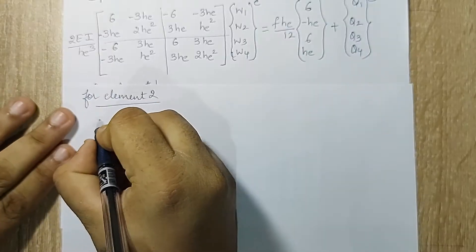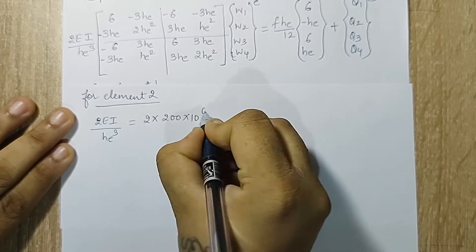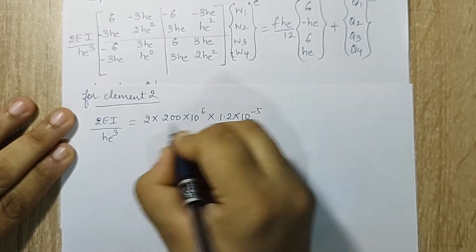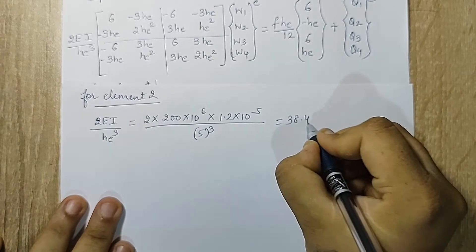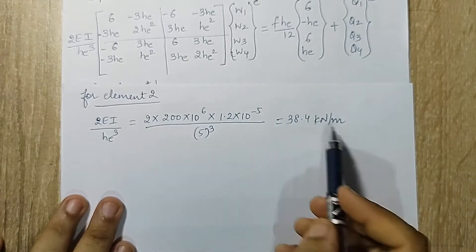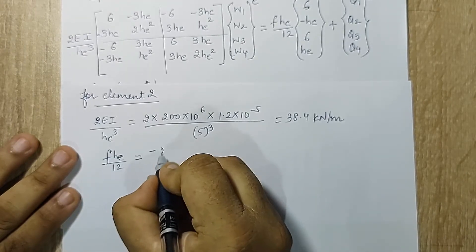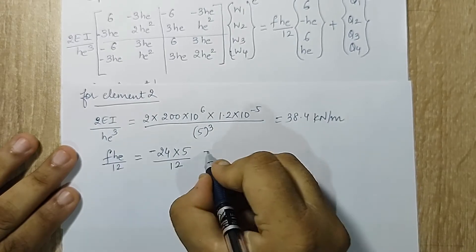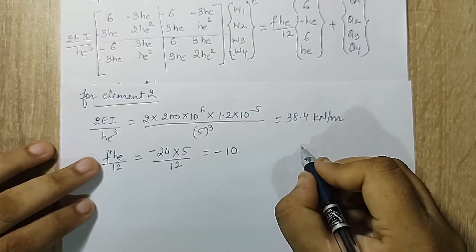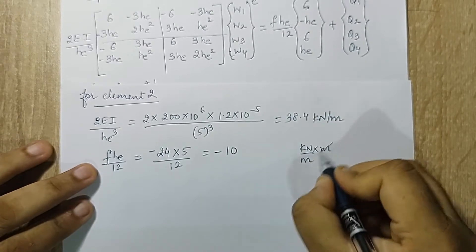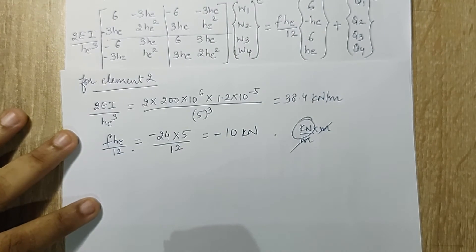Let's go for element 2 now. I calculate 2EI upon h³ which will be 2×200×10⁶, this is 1.2×10⁻⁵ and h is again 5. Now here since the value of h is same I am getting the same answer here 38.4 kN per meter. But had this been different I would have got a different answer. Next I have Fh upon 12. So here I have the value of F as minus 24, h is 5 and this is 12. So this brings it to minus 10. The unit of F is kN per meter and this h is in meter. So this gets cancelled.